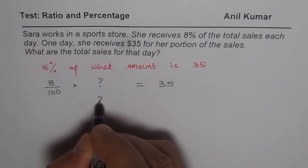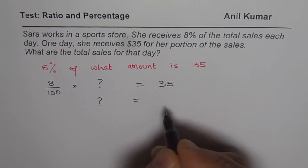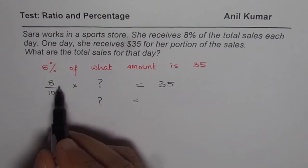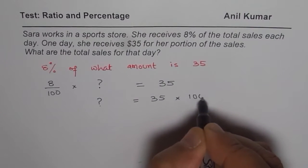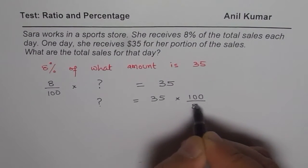And from here, to find this what amount, what will you do? Multiply both sides by 100 over 8. So we get 35 times 100 over 8. So we get our amount.